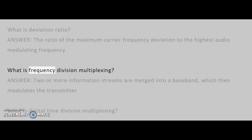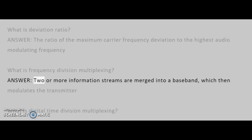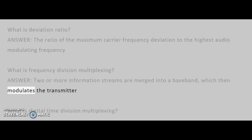What is frequency division multiplexing? Answer: Two or more information streams are merged into a baseband, which then modulates the transmitter.